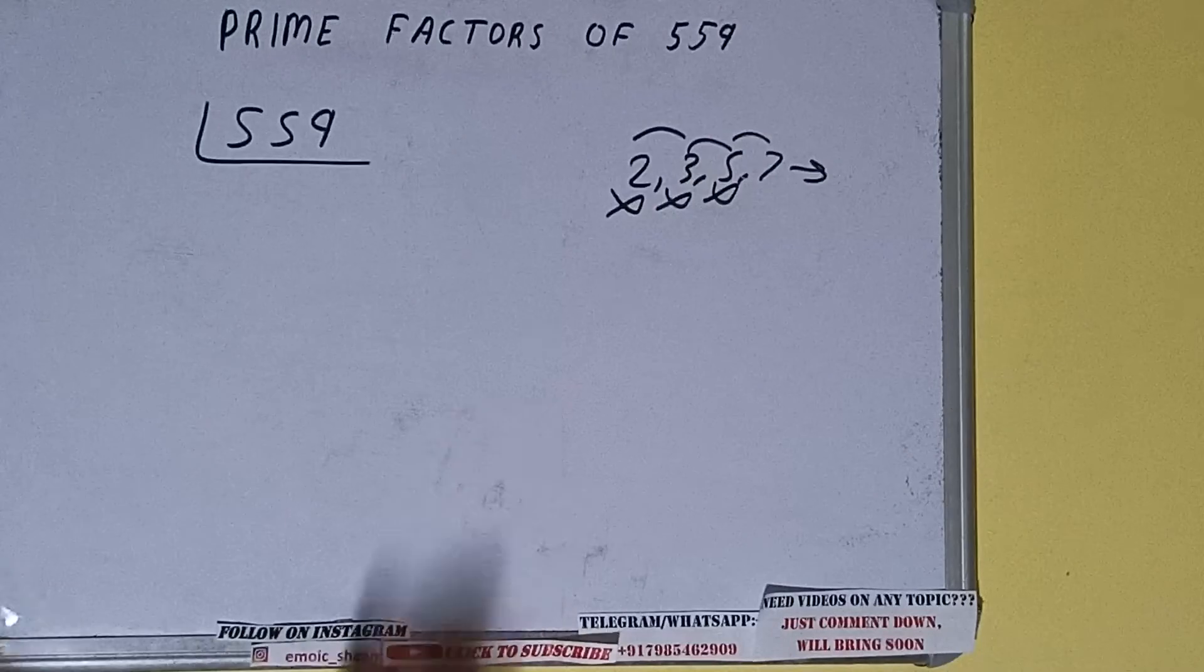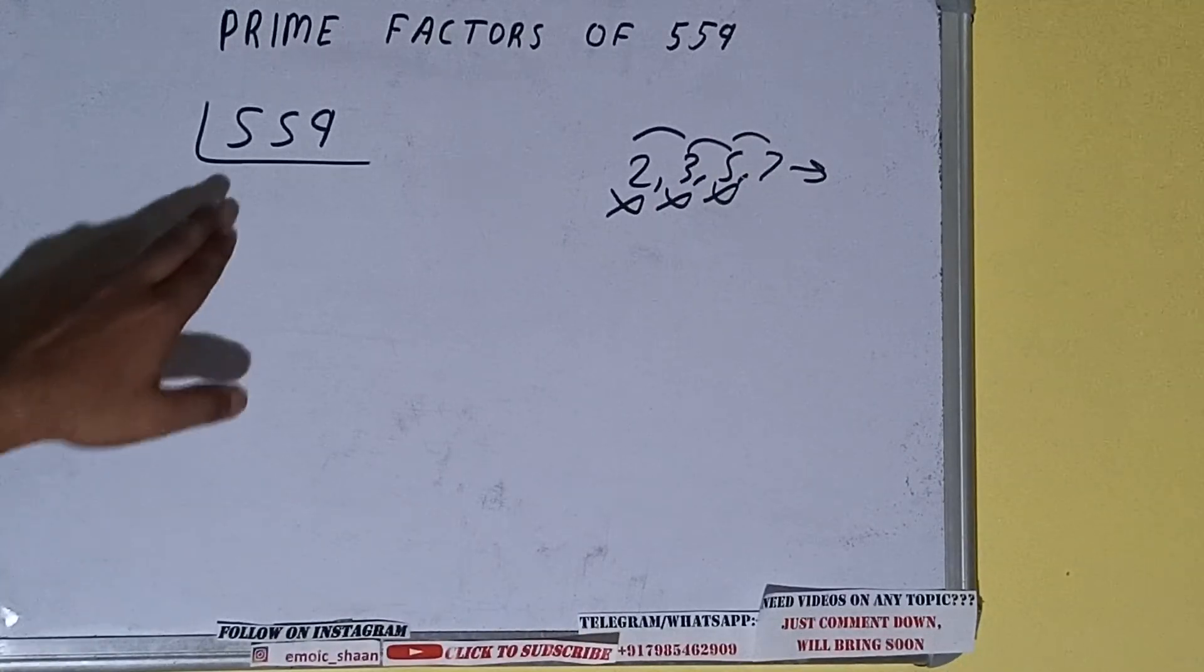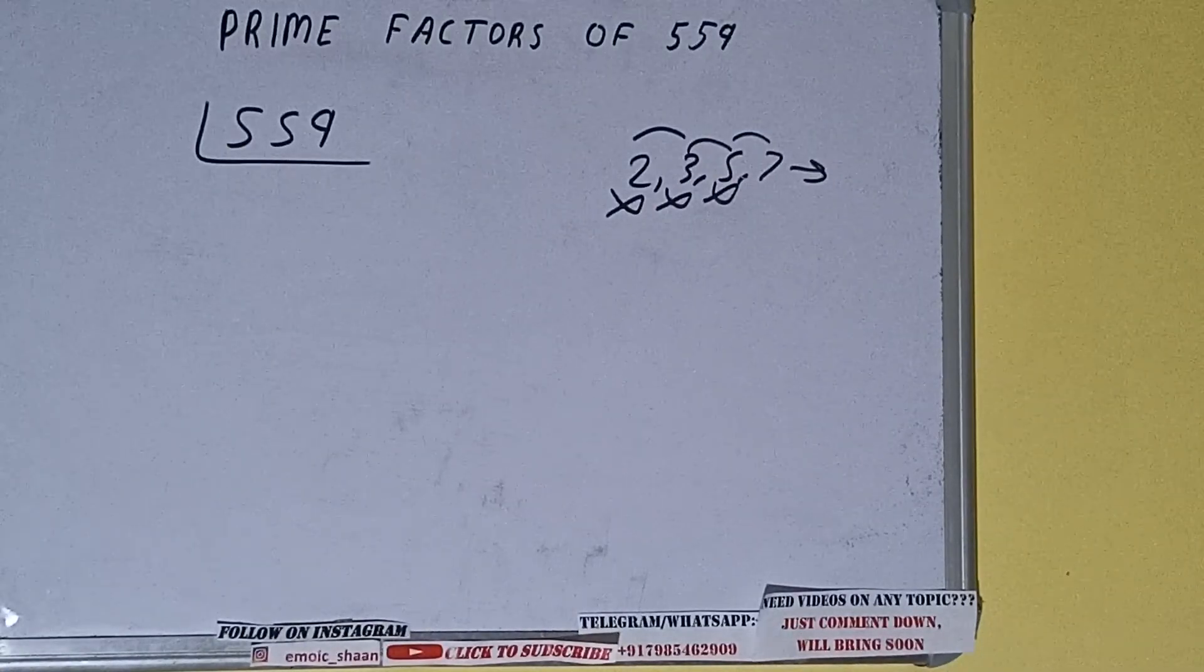Let's check with 7. 7 times 7 is 49, 6, 9... it is not divisible by 7 also.